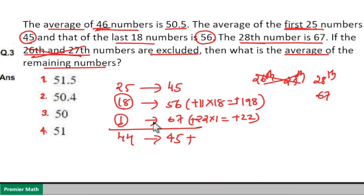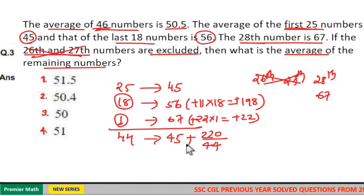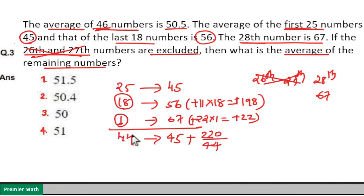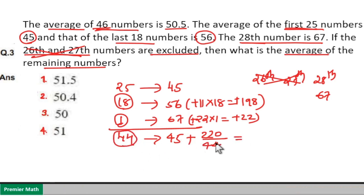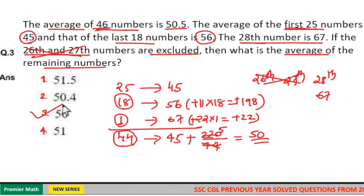This increment of 220 should be equally distributed across the 44 numbers, taking 45 as the common average. So 220 divided by 44 equals 5. Therefore, the average is 45 plus 5, which equals 50. So option 3 is your answer.